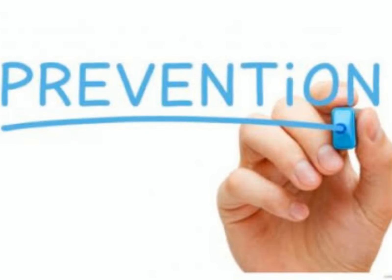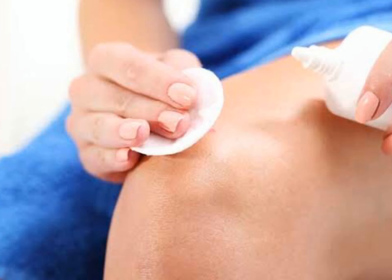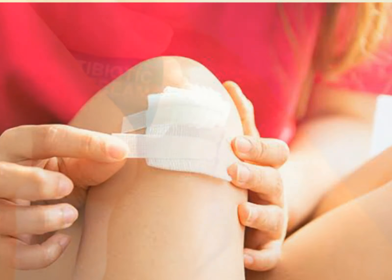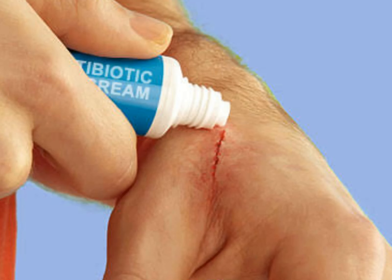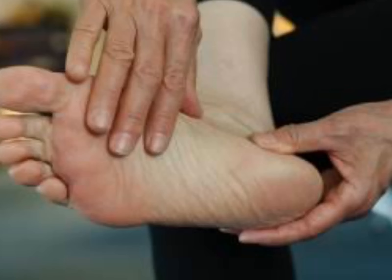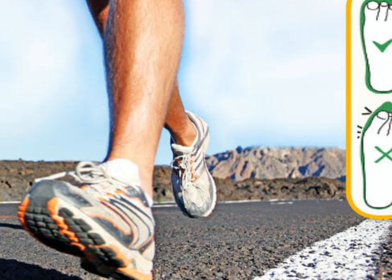Cellulitis can be prevented by keeping skin wounds clean, covering them with a bandage, and applying antibiotic cream for protection. If one has diabetes or poor circulation, examine the feet every day, use a moisturizer, and avoid injury by wearing proper shoes.